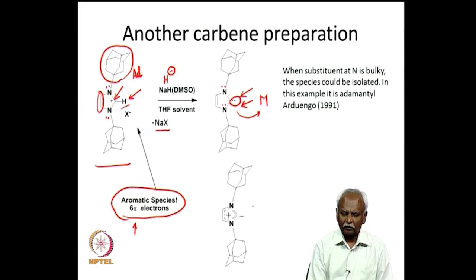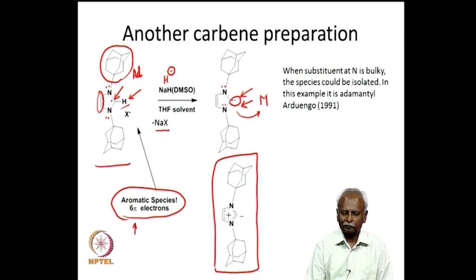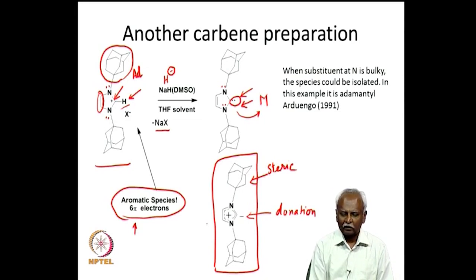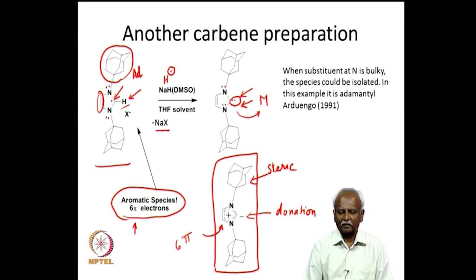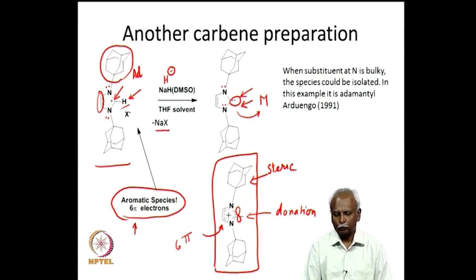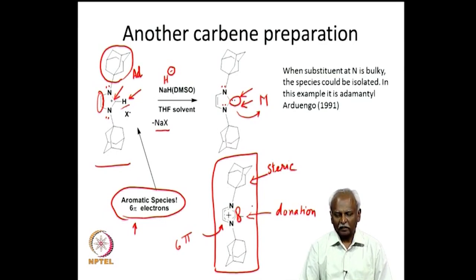To summarize the good features of this carbene: it has steric protection, a pair of electrons for donation, and six π-electrons in its ring system perpendicular to the plane that stabilize it through aromaticity. It also has a vacant orbital on the carbon that can be used for electron acceptance from the metal — though this would partially destroy aromaticity of the ring system, the possibility exists for pi-accepting character.